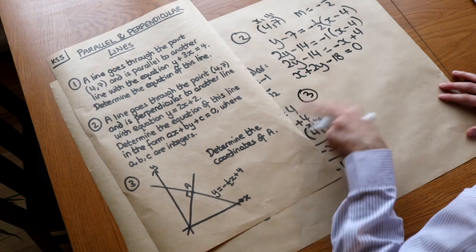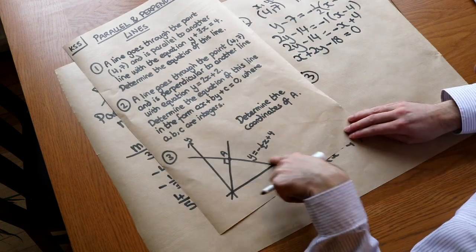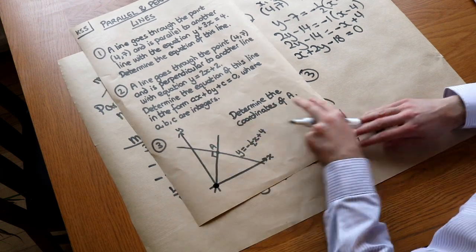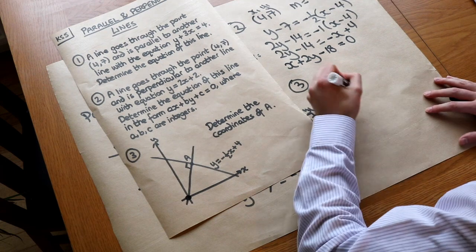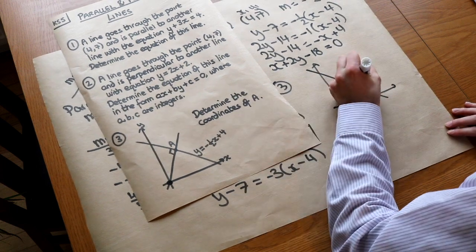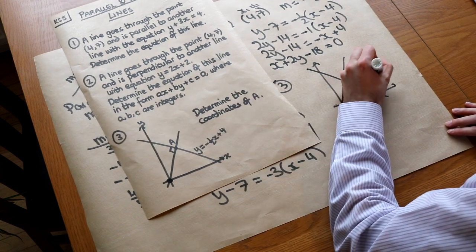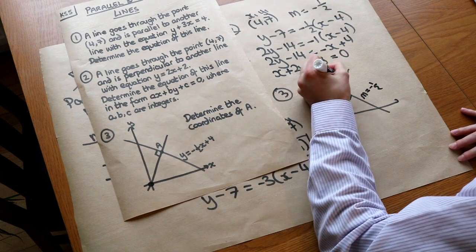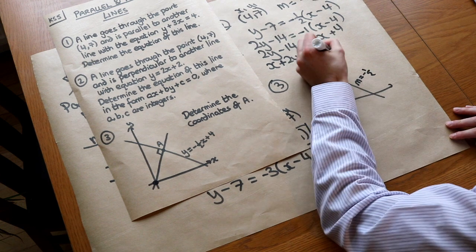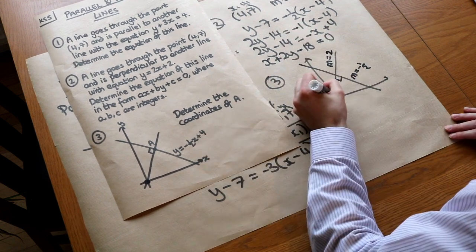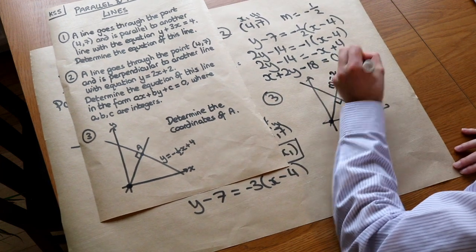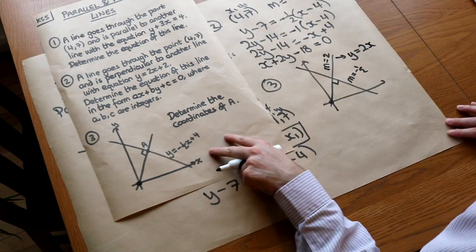Finally, we have two perpendicular intersecting lines. We need to find the coordinates of point A. One line has equation y equals minus a half x plus 4, so its gradient is minus a half. Since the two lines are perpendicular, the other line has the negative reciprocal gradient of minus a half, which is two. Because this second line goes through the origin, its y-intercept is zero, so its equation is y equals 2x.